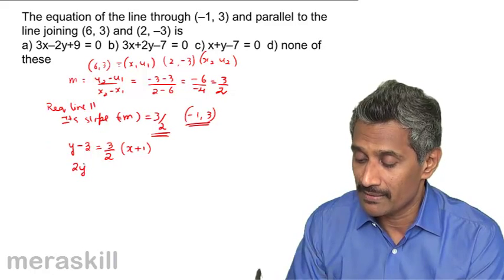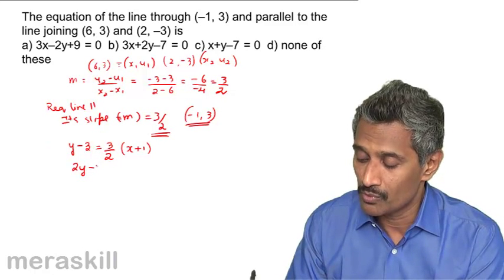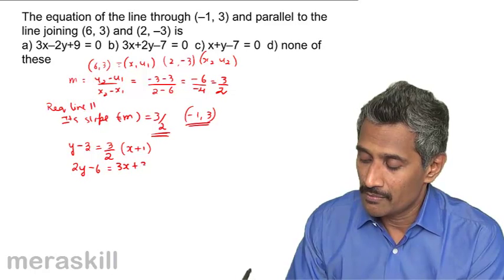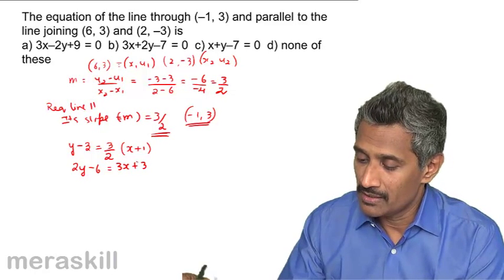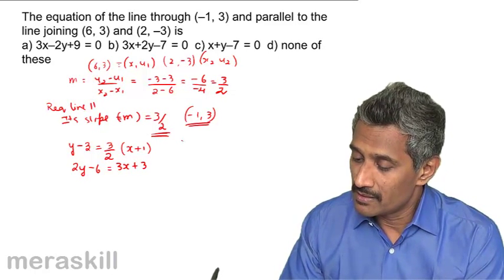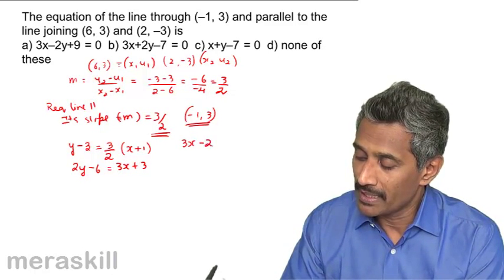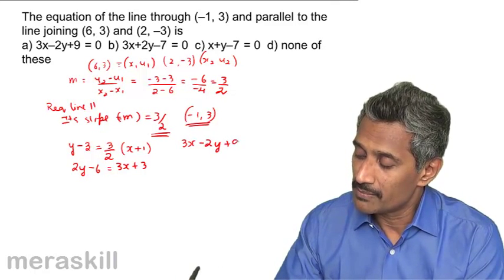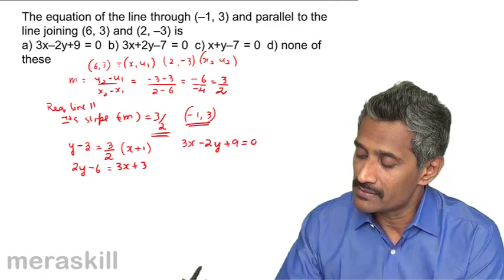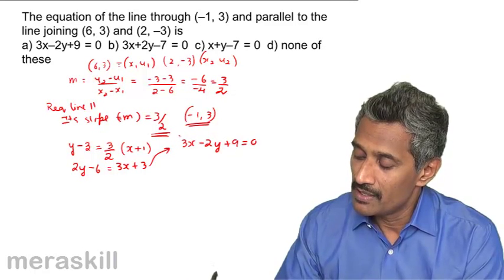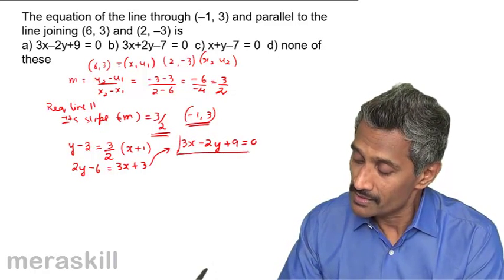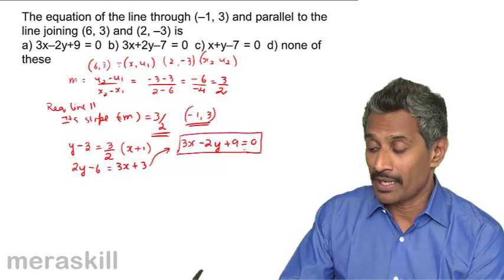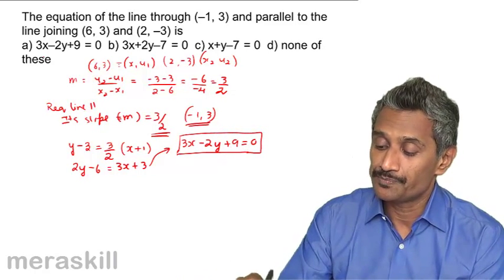Cross multiplying gives 2y minus 6 equals 3x plus 3. Rearranging, we get 3x minus 2y plus 9 equals 0. So the equation of the required line is 3x minus 2y plus 9 equals 0.